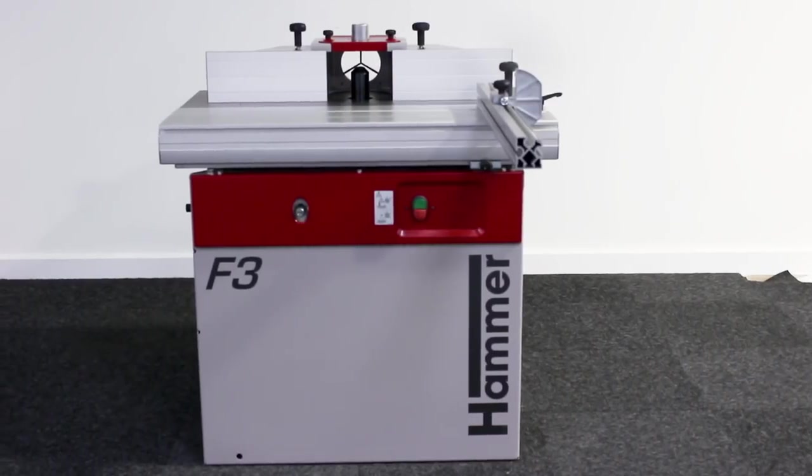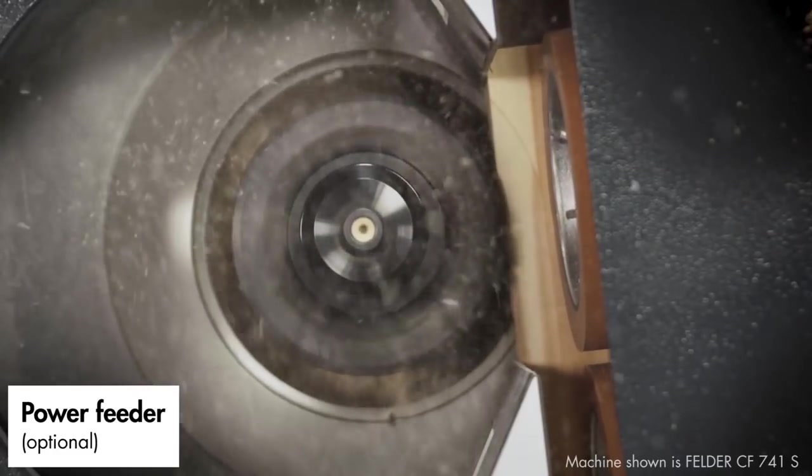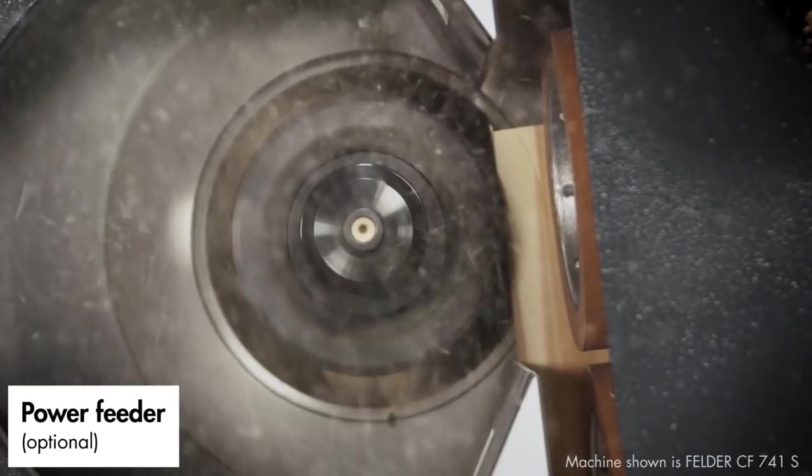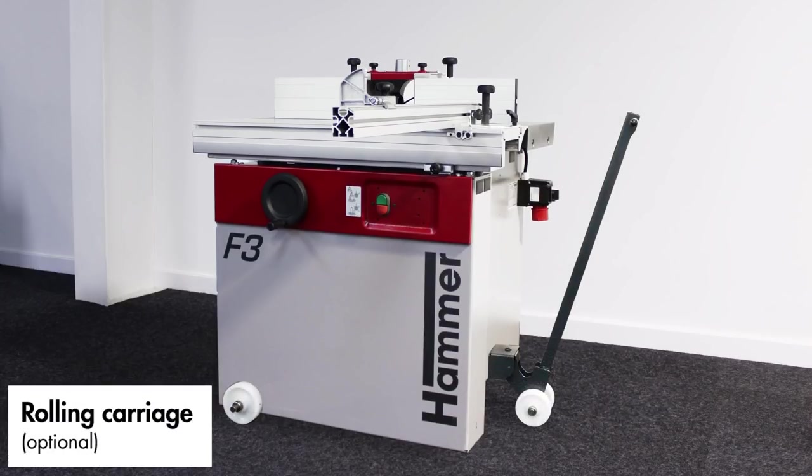For added operating comfort, the F3 can be fitted with a power feeder which provides a constant pressure and feed rate for consistently precise results. As with all Hammer machines, the F3 can be fitted with a rolling carriage for enhanced maneuverability.